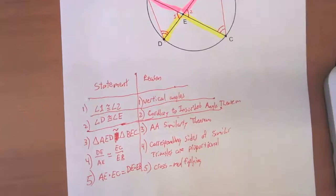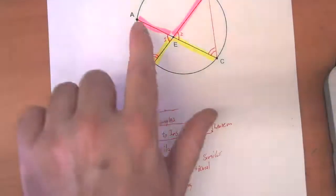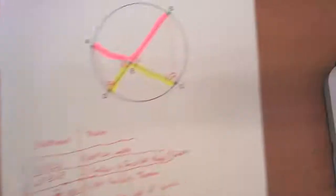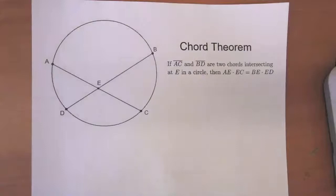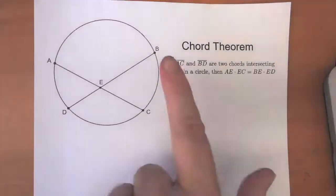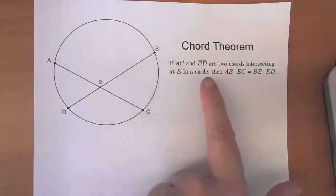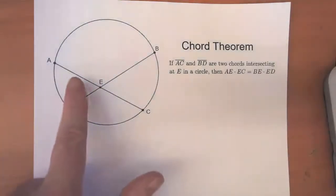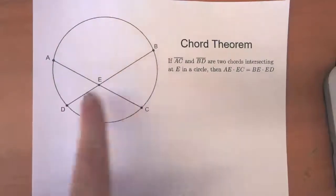And so what I want to do is take this proof and take out these sides and all of the other supplementary stuff, and just write what we just identified here. We'll call this the chord theorem: that if AC and BD are two chords intersecting at E in a circle, then all we know, that's all we need to know, in order to say that AE times EC is equal to BE times ED.